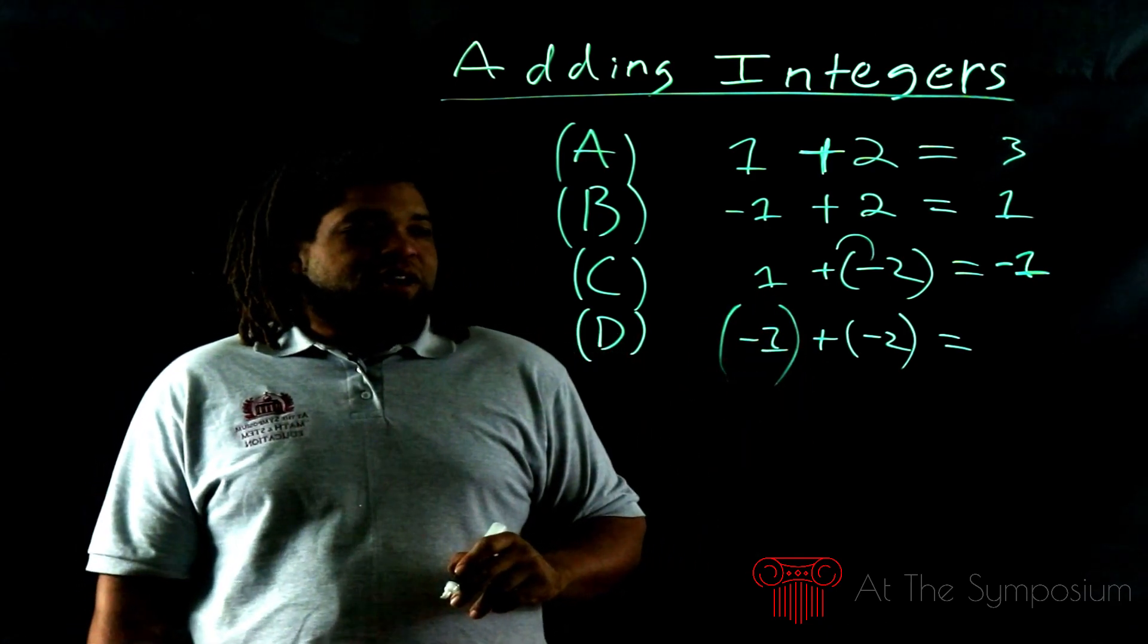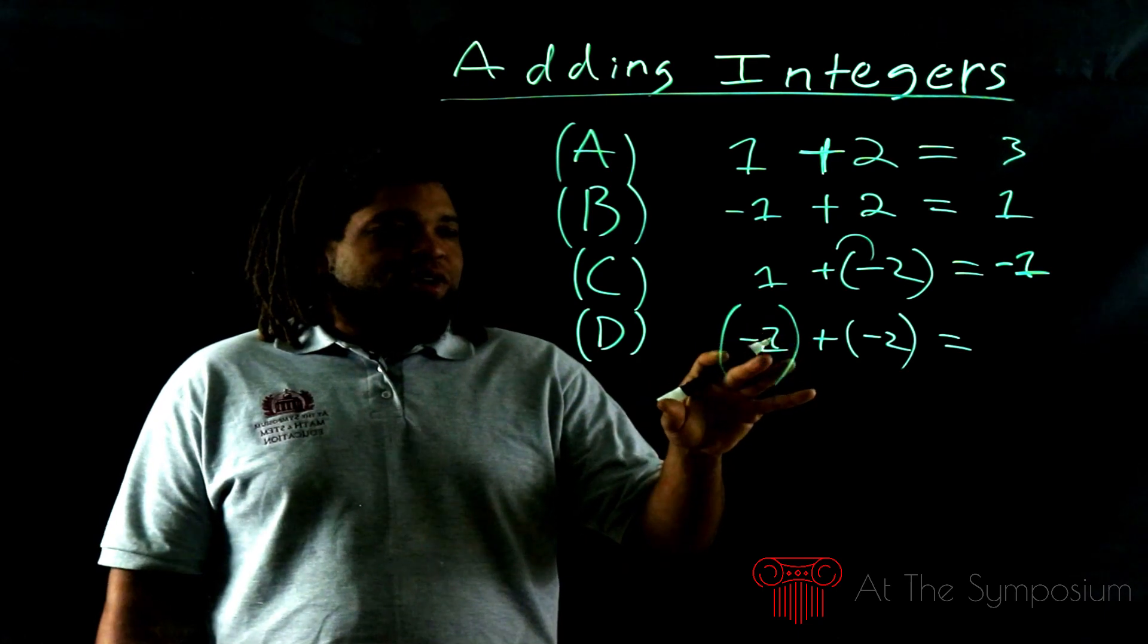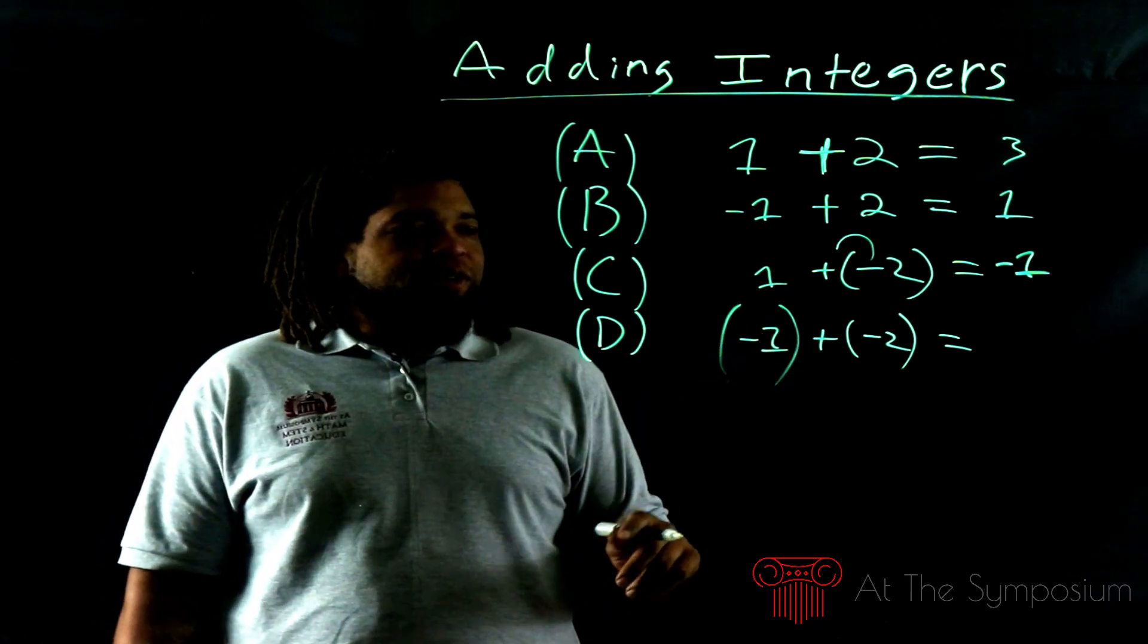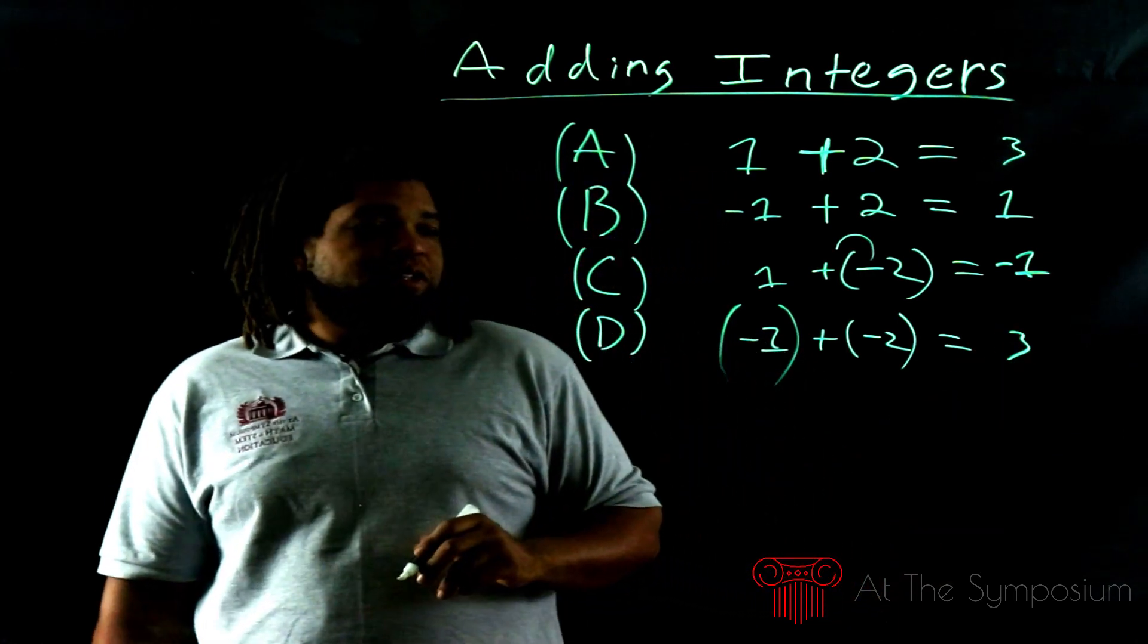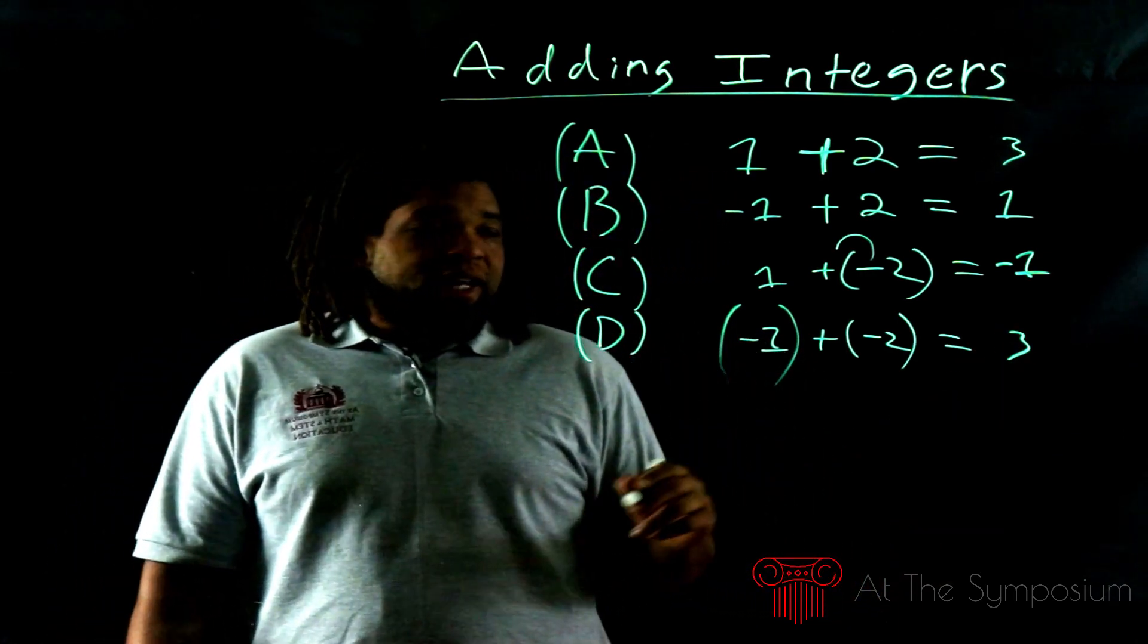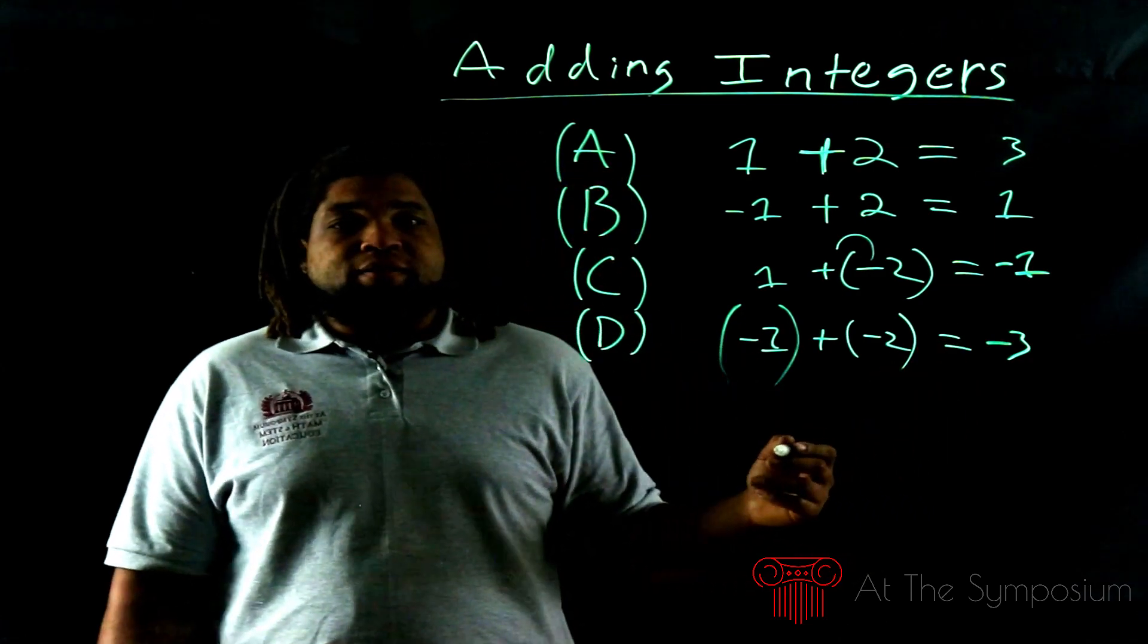How we're going to deal with this kind of problem is we're actually just going to add. So if you put those parentheses there, it illustrates exactly what we're going to do. We're just going to add the two numbers. What's 1 and 2? 1 + 2 = 3. Now what do we do with the negative? Well, we actually just keep the negative. That's all we do. You just keep the negative when you add two negative numbers.